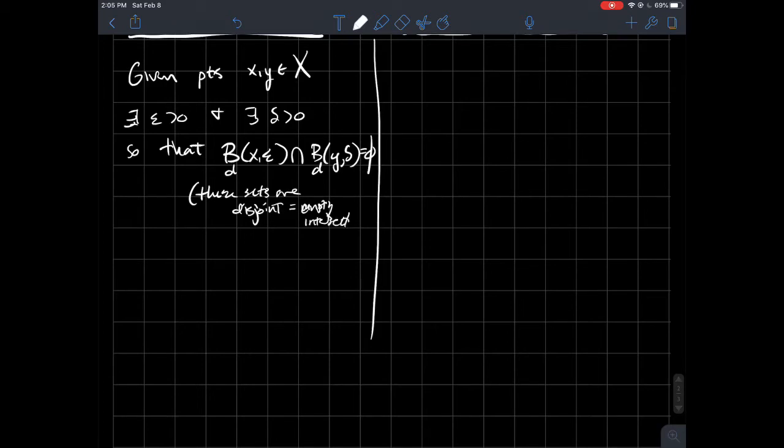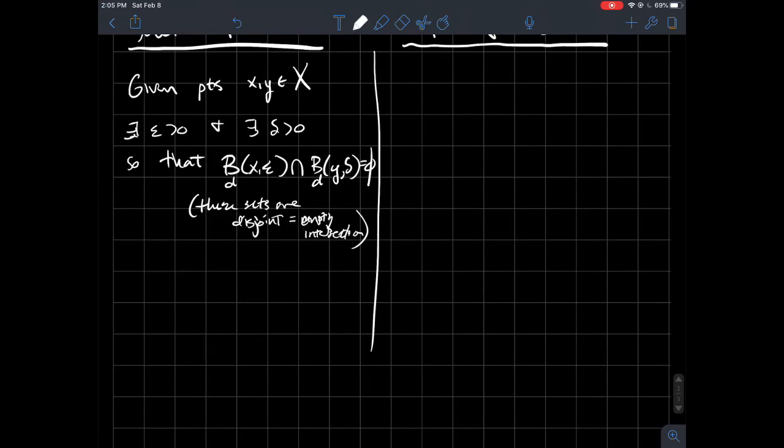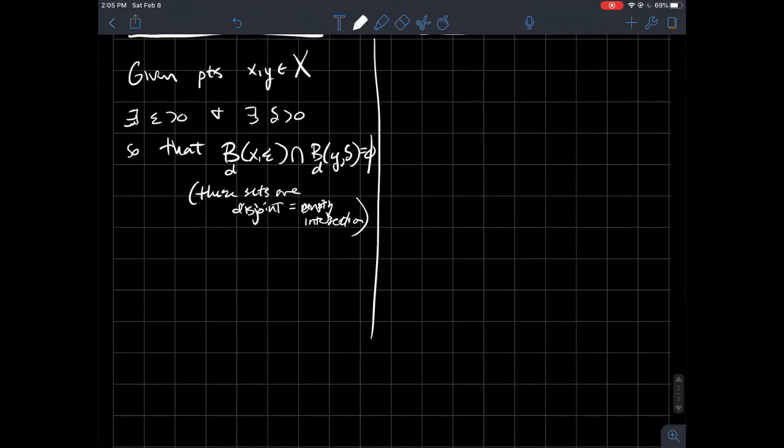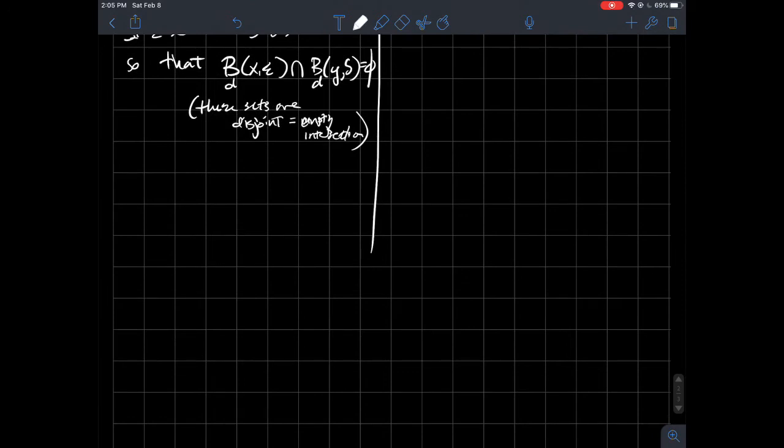But what's the concept of being Hausdorff here? What's the underlying thing that's going on? We're saying that we should be able to separate these two points x and y. We should be able to find a window around each point where those windows don't overlap at all. And that's pretty believable in a metric space.